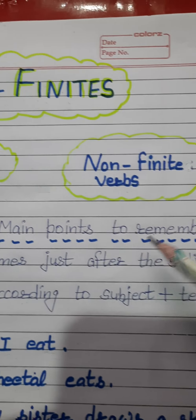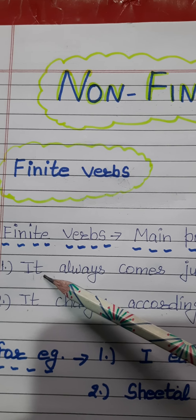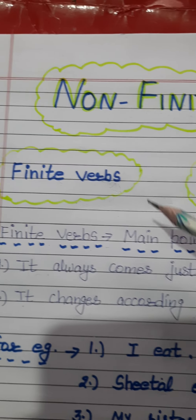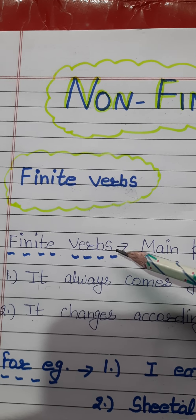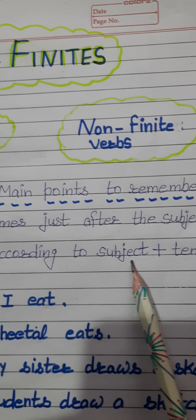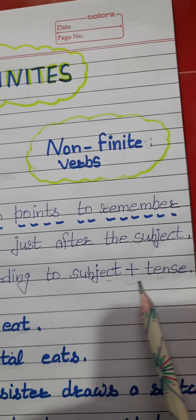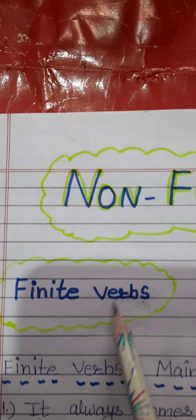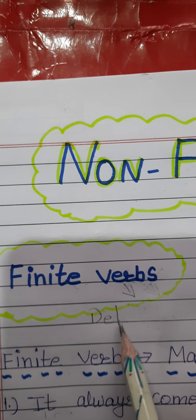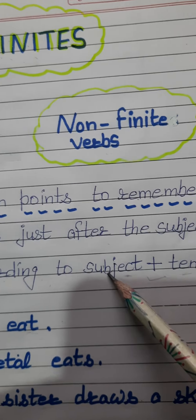Here we have some main points to remember about finite verbs. The first point is that a finite verb always comes just after the subject. The next point is that it changes according to the subject or the tense — it will get changed. This means that finite verbs are dependent verbs, as they will get changed according to the subject or the tense.